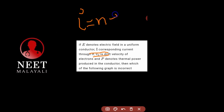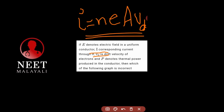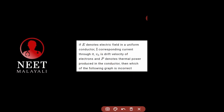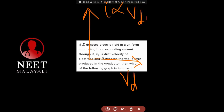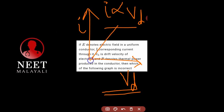Using the formula i equals neAvd, i is directly proportional to vd. So with drift velocity vd on the x-axis and current i on the y-axis, there is direct proportionality — meaning it will be a straight line passing through the origin.